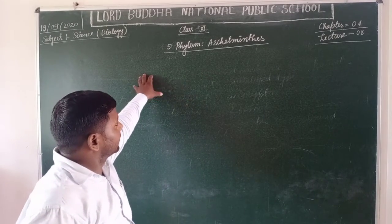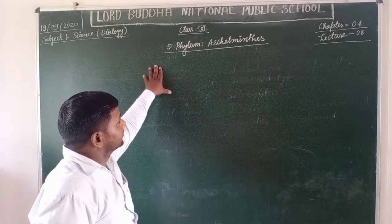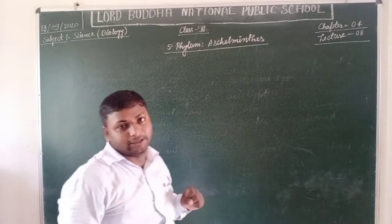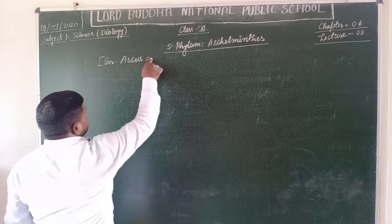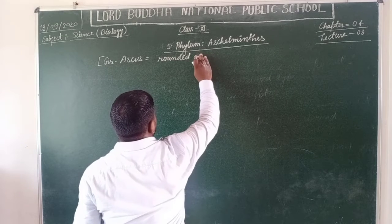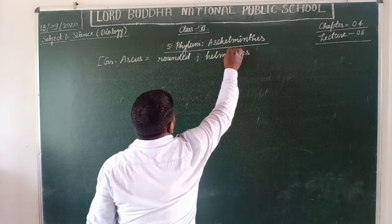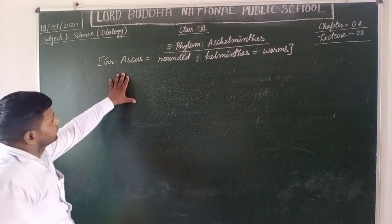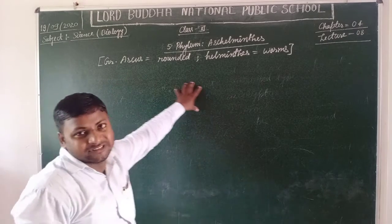Hello Class 11, today we are going to discuss the next phylum of Kingdom Animalia. This is the phylum Aschelminthes. The term Aschelminthes is derived from the Greek words: 'askos' meaning rounded or ring-shaped, and 'helminth' meaning worm. So the members belonging to this phylum are commonly known as roundworms.